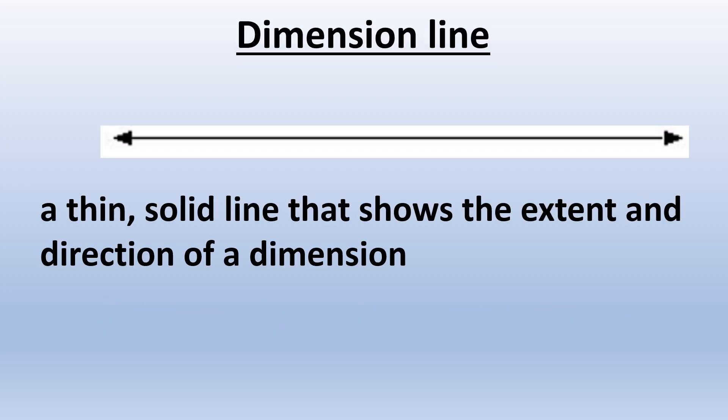Dimension Line: A thin, solid line that shows the extent and direction of a dimension.